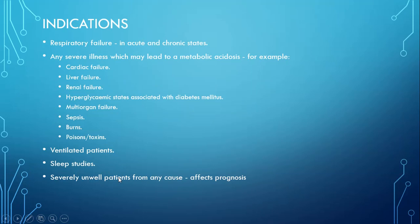Now, what are the indications of ABGs? The various indications are respiratory failure, either in acute or chronic state. Any severe illness which may lead to metabolic acidosis — for example, cardiac failure, liver failure, renal failure, hyperglycemic states like diabetes mellitus, multi-organ failure, sepsis, burns, and poisons and toxins.